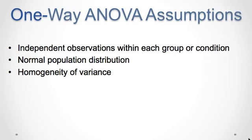The assumptions for a one-way ANOVA are the same assumptions required for the independent samples T test. One, observations within each sample must be independent. Two, populations from which samples are selected must be normal. And three, populations from which samples are selected must have equal variances, or this is homogeneity of variance.